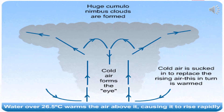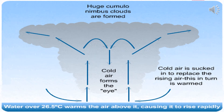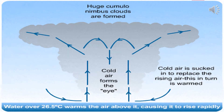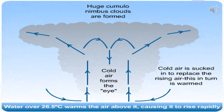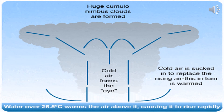Tropical storms form over water that is around 25 to 27 degrees Celsius in temperature. The warm water heats the air above it, causing it to rise rapidly. Cooler air from elsewhere moves in to replace the rising air and the process repeats. As the air rises rapidly, it cools and forms clouds. Huge clouds are formed and the cyclone moves quickly over water as long as it has warm enough water to keep the storm energized. Once it reaches over land, where there is less moisture and the surface is cooler, tropical storms quickly calm down.